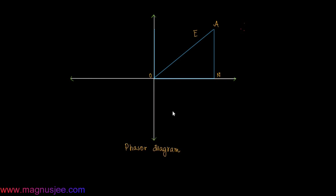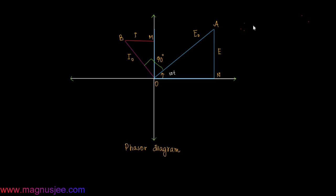In the phasor diagram, e = e0·sin(ωt) is represented by the right-angled triangle ANO, such that OA = e0 and the perpendicular AN = e. Triangle BMO represents the equation i = i0·sin(ωt + π/2), where OB = i0 and BM = i.